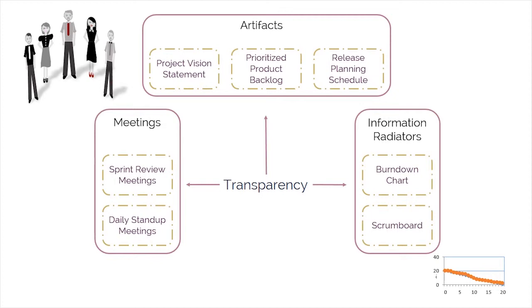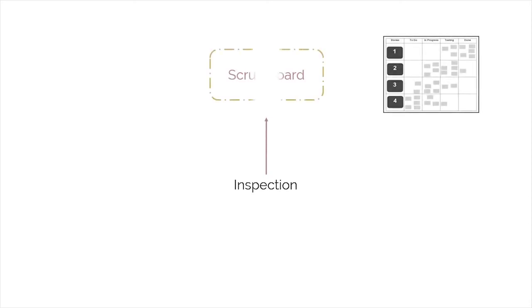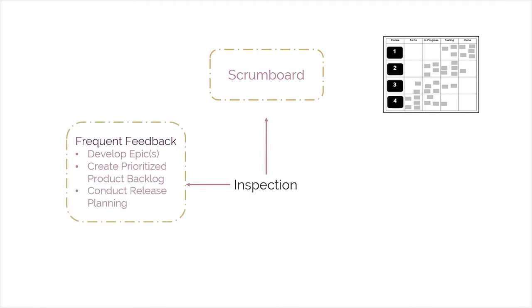The next characteristic of empirical process control is inspection. Let's have a look at the displayed diagram, which summarizes the concept of inspection in Scrum. Scrum provides a point of inspection with the use of a common Scrum board and other information radiators, which show the progress of the Scrum team on completing tasks in the current sprint. Feedback collected from the customer and other stakeholders during the develop epics, create-prioritize product backlog, and conduct-release planning processes give additional opportunities for inspection.